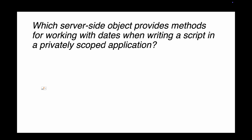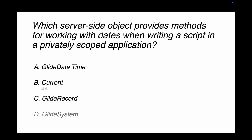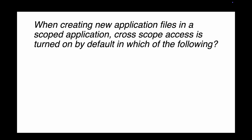Question 5: Which server-side object provides methods for working with dates when writing a script in a privately scoped application? Options include GlideDateTime, current, GlideRecord, and GlideSystem. Current represents the current record, GlideRecord is used for database queries, and GlideSystem has many purposes — but GlideDateTime is specifically for working with dates. The right answer is GlideDateTime, which I've also covered in my custom application videos.